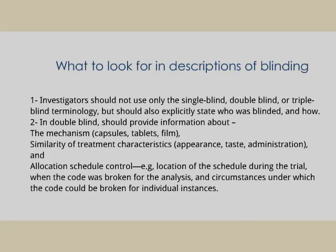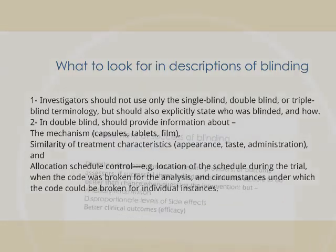Details should include the appearance of the tablet, the taste, and how administration of the drug is done. The allocation schedule control during the trial, when the code was broken for analysis, and circumstances under which the code can be broken for individual cases should also be documented. Each trial material and trial subject should have a unique code indicating what drug is administered to which subject.